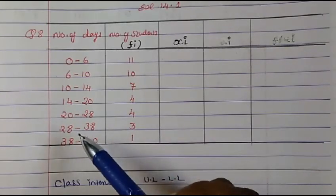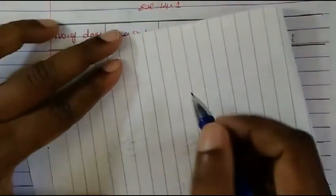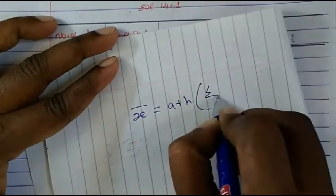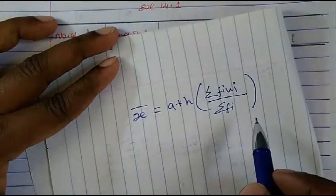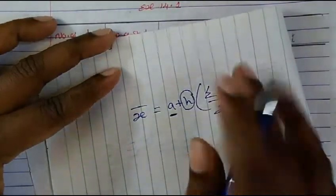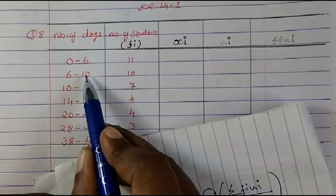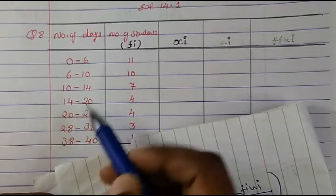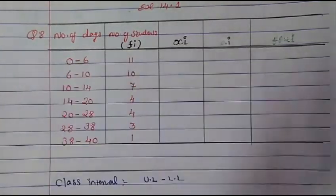The step deviation method formula is: x̄ = A + h × (Σfi·ui / Σfi). Here, h is the class interval. But we have class intervals of 6, then 4, then 4, then 6 — so the h value is not constant. Therefore, we cannot use the step deviation method.